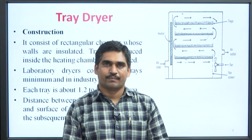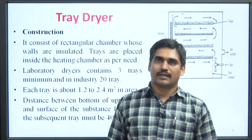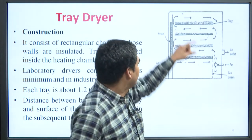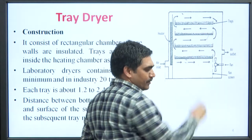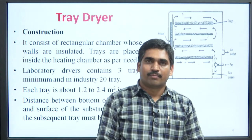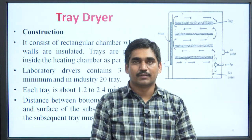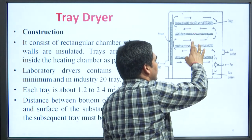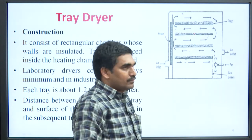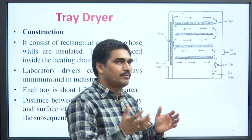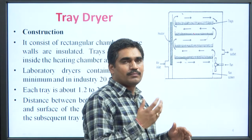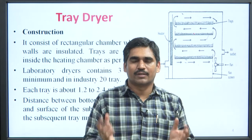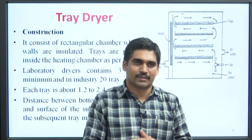The construction of the tray dryer: it consists of a rectangular chamber. If you see the diagram, it is rectangular in shape. The walls of the tray dryer are insulated, and trays are placed inside the heating chamber as needed. For example, as seen in the diagram, 4 trays are placed. If you have a small amount of sample, you can place a single tray; more samples require 2 or 3 trays.